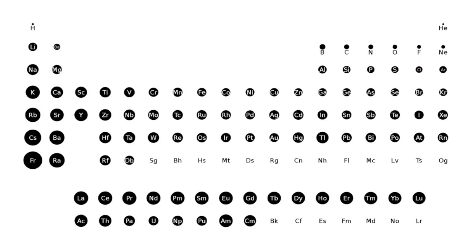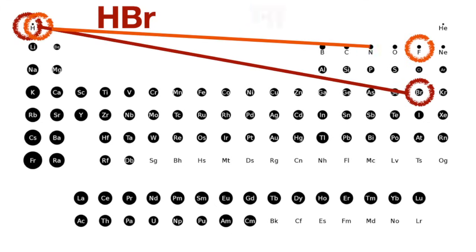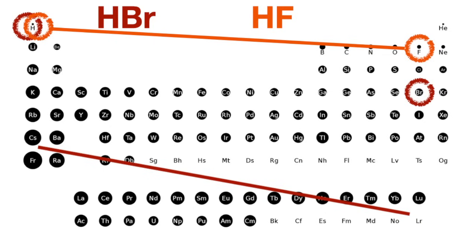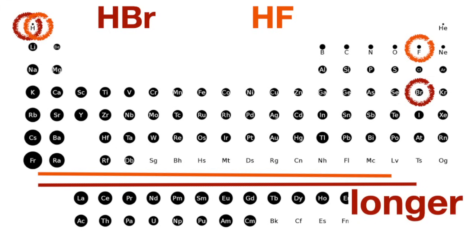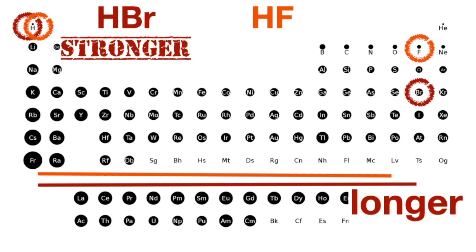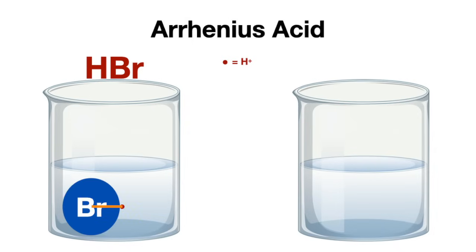The quick trick to help easily rank Arrhenius acids is to determine the distance between the atoms within each of the compounds on the periodic table. The greater the distance, the more acidic the compound is. In this case, the bromic acid has a longer distance between its atoms on the periodic table, making it a stronger acid. This simply means that bromic acid, having bromine with a larger atomic radius due to its lower electronegativity, will more likely break the bonds to the hydrogens, releasing more protons in solution, making it a stronger acid.